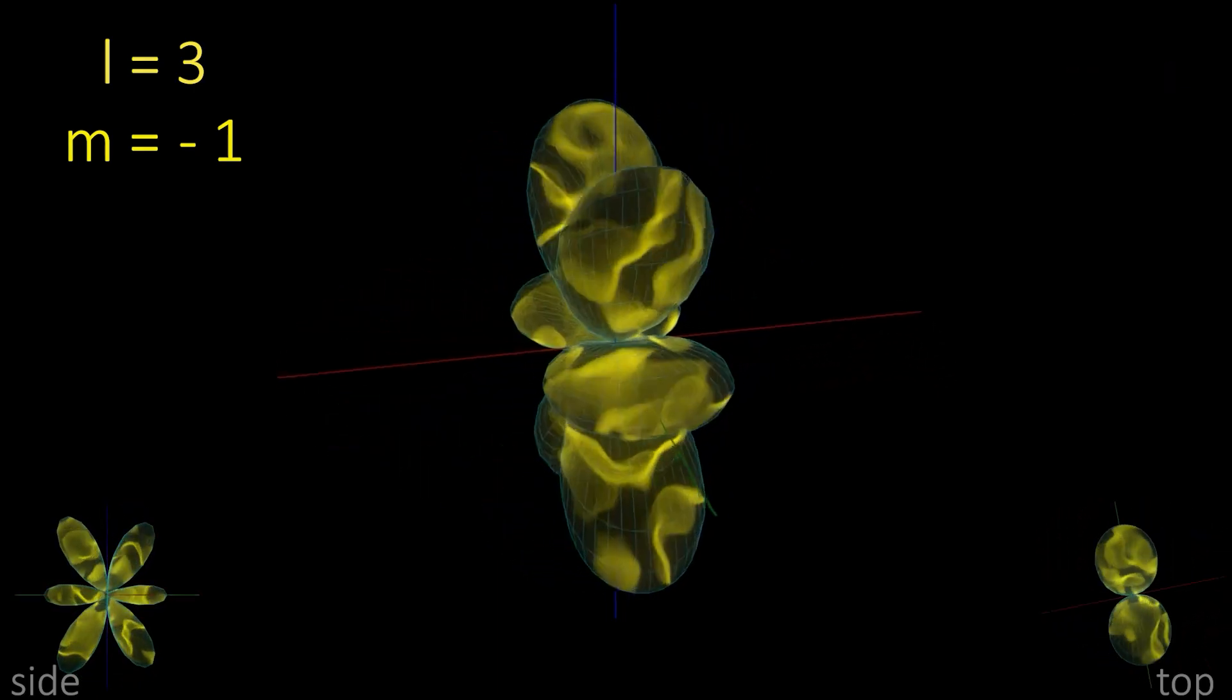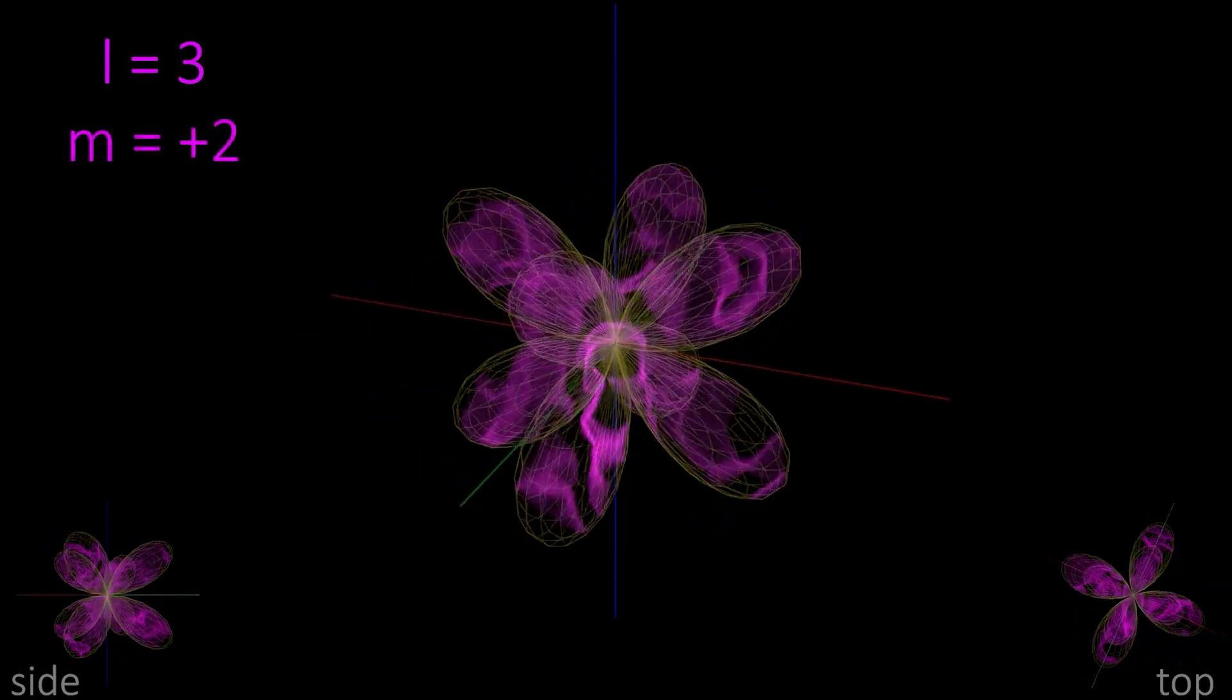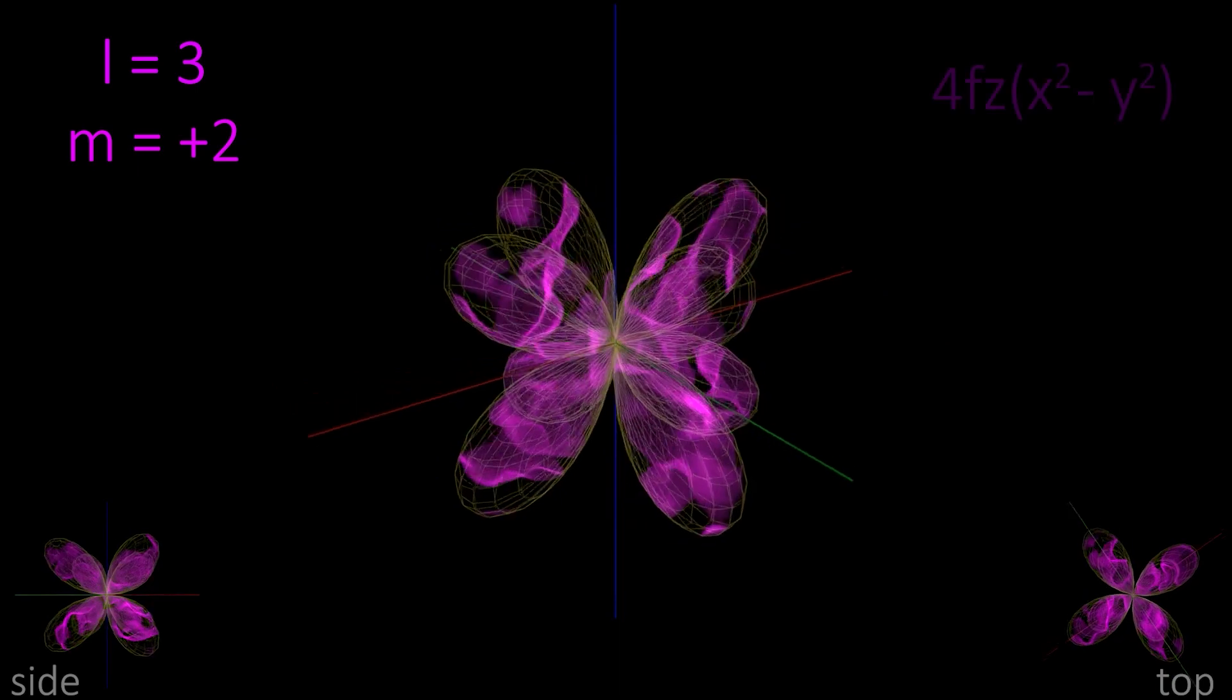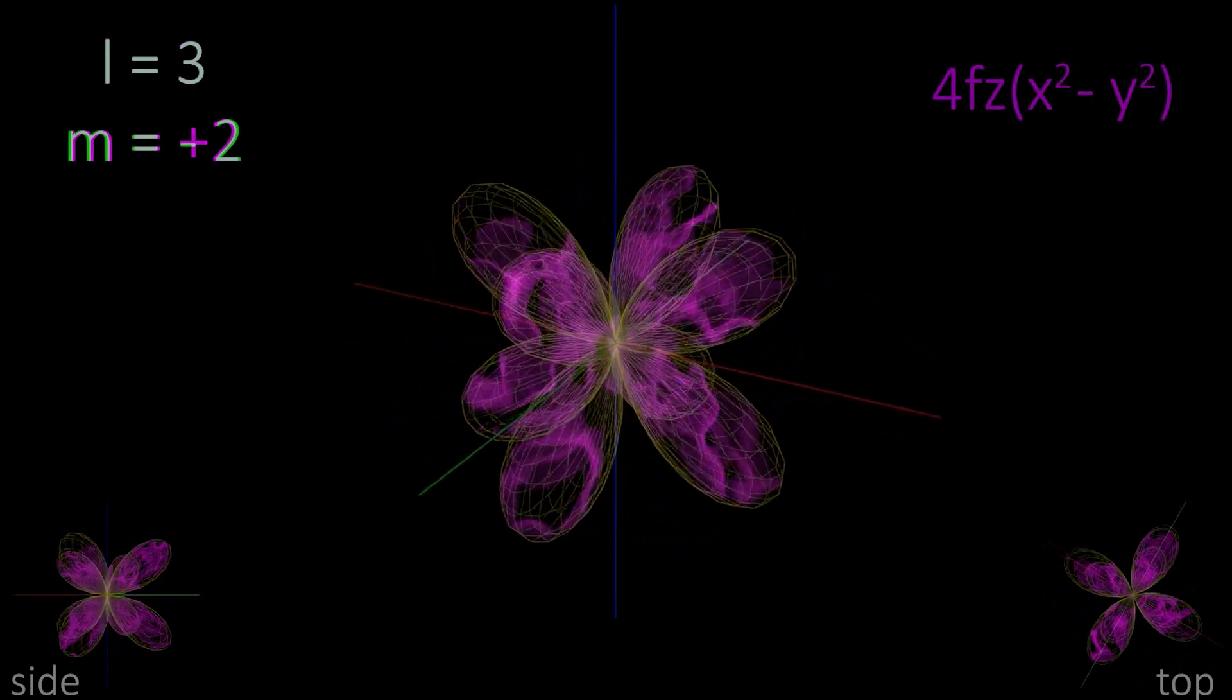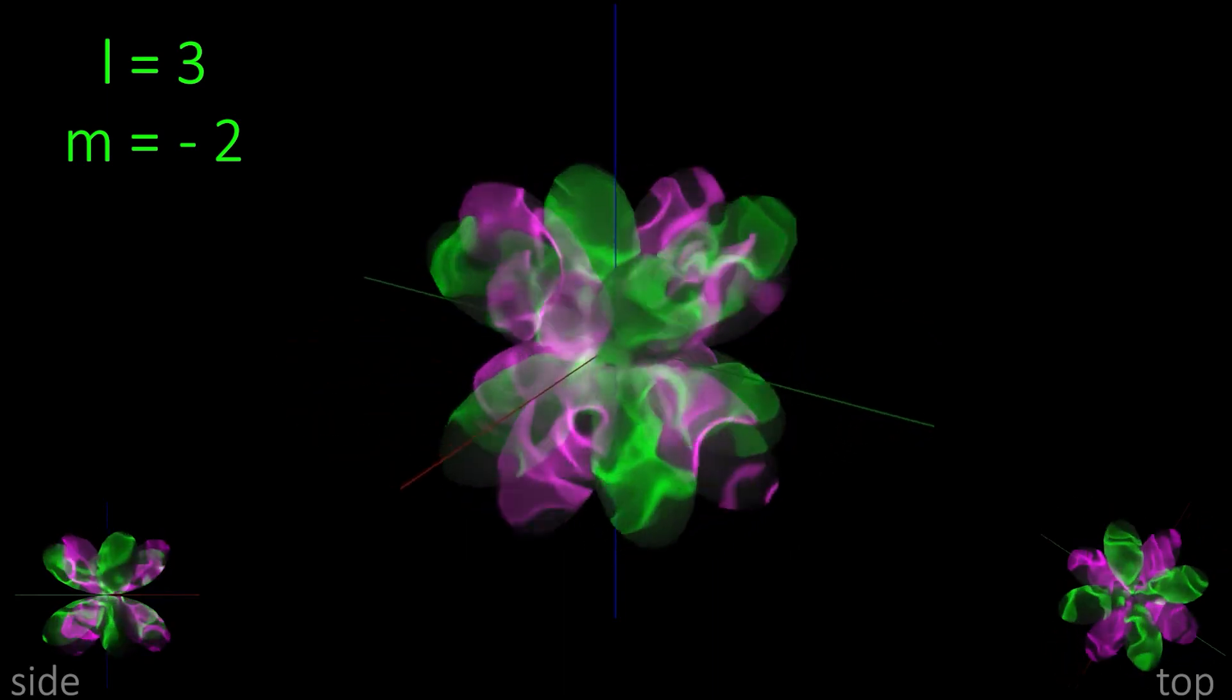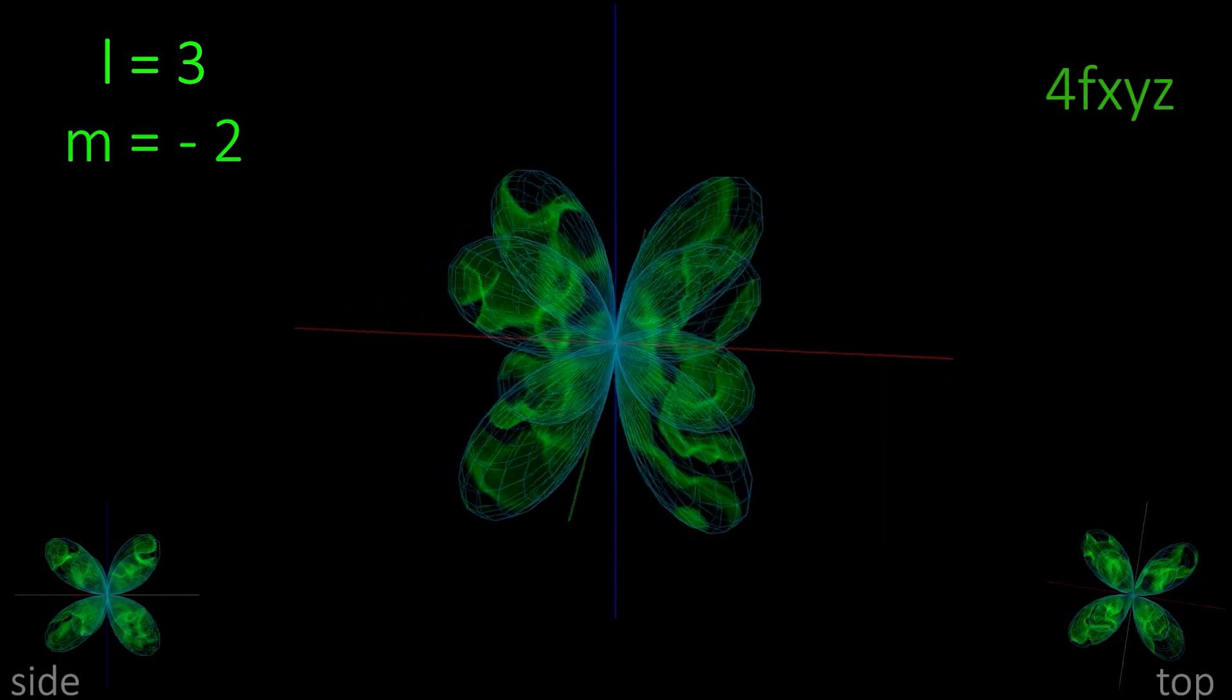Magnetic quantum number M equals plus or minus 2, we have 8 lobes. M plus 2 has lobes in the xz and the yz planes. We label this 4fz x squared minus y squared. M minus 2 is the same, just rotated 45 degrees around z. We call this 4fxyz.